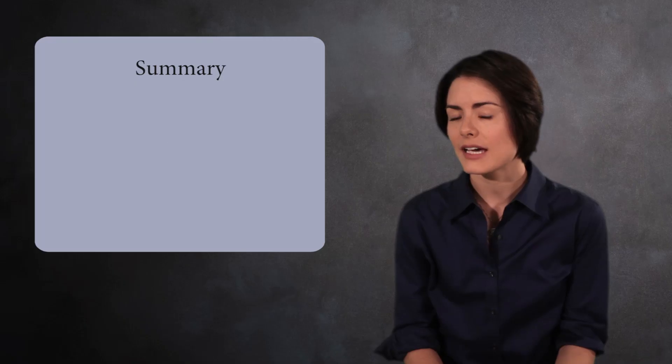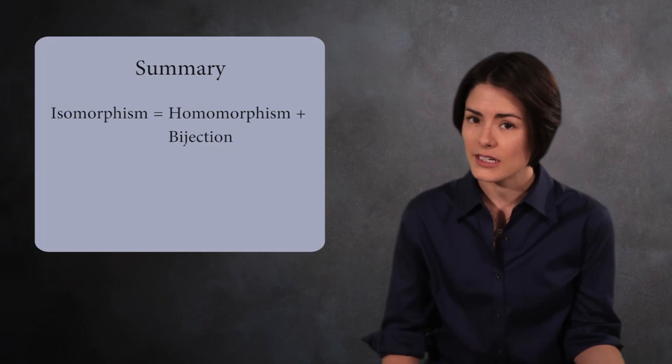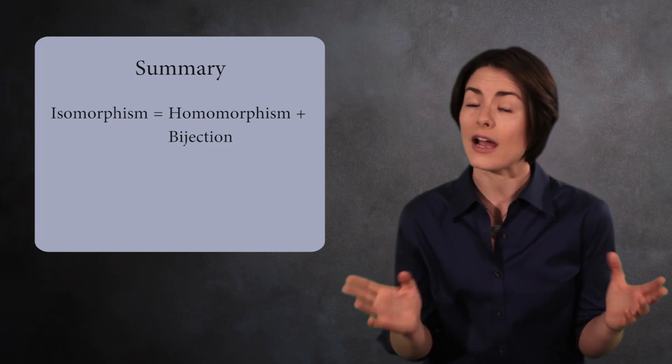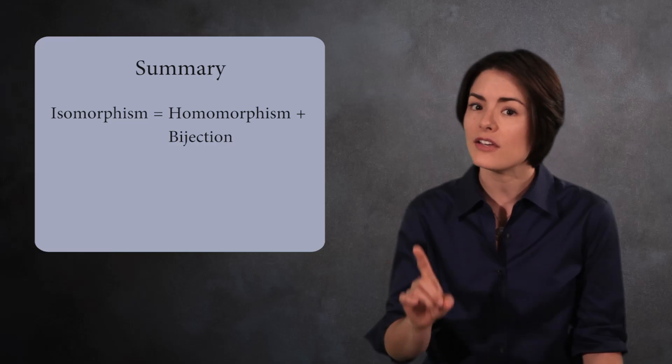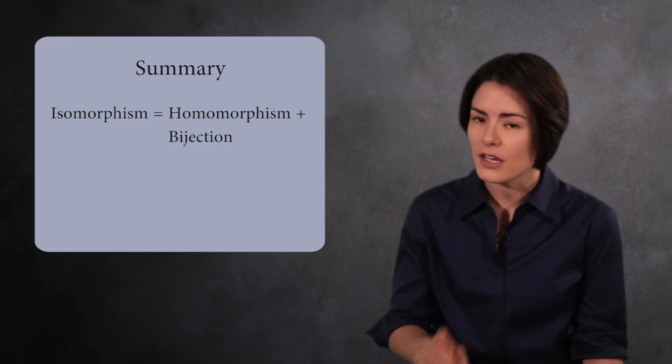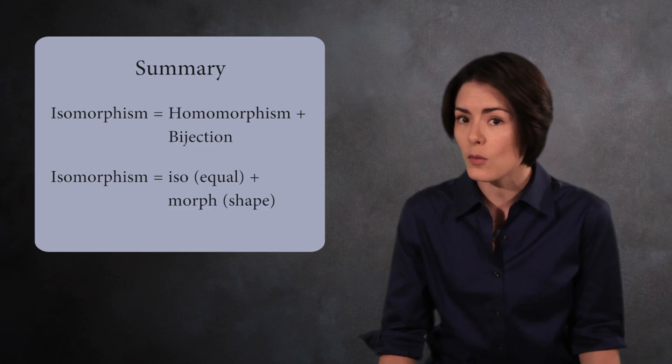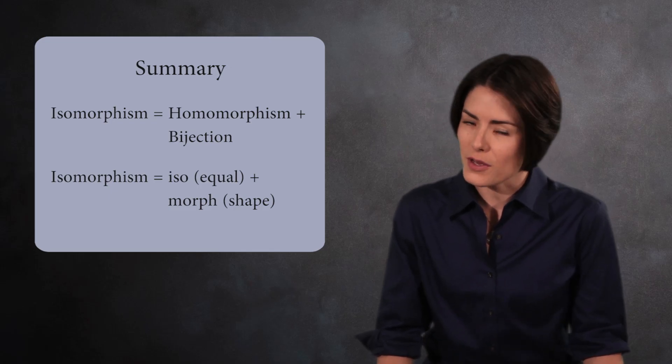Let's recap. An isomorphism is a homomorphism that is also bijection. If you have an isomorphism between two groups, then you say the groups are isomorphic. This means they have the exact same group structure, even if they look different from each other. The word isomorphism reflects the definition. Iso means equal and morph means shape. I doubt anyone could think of a better name than this.